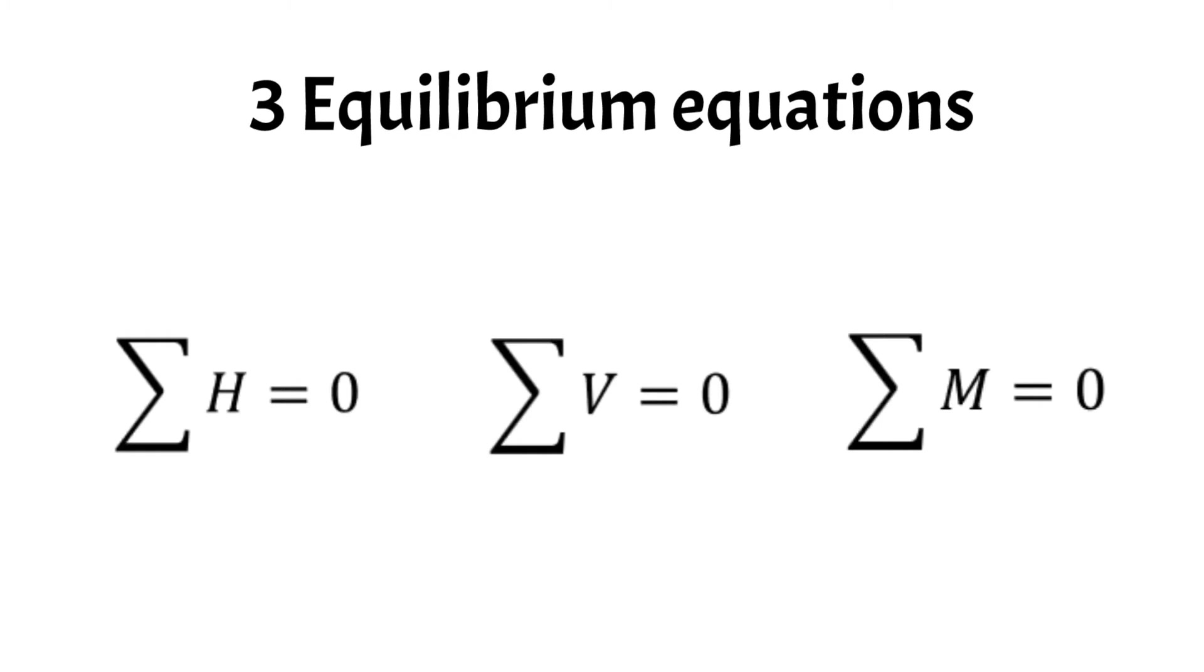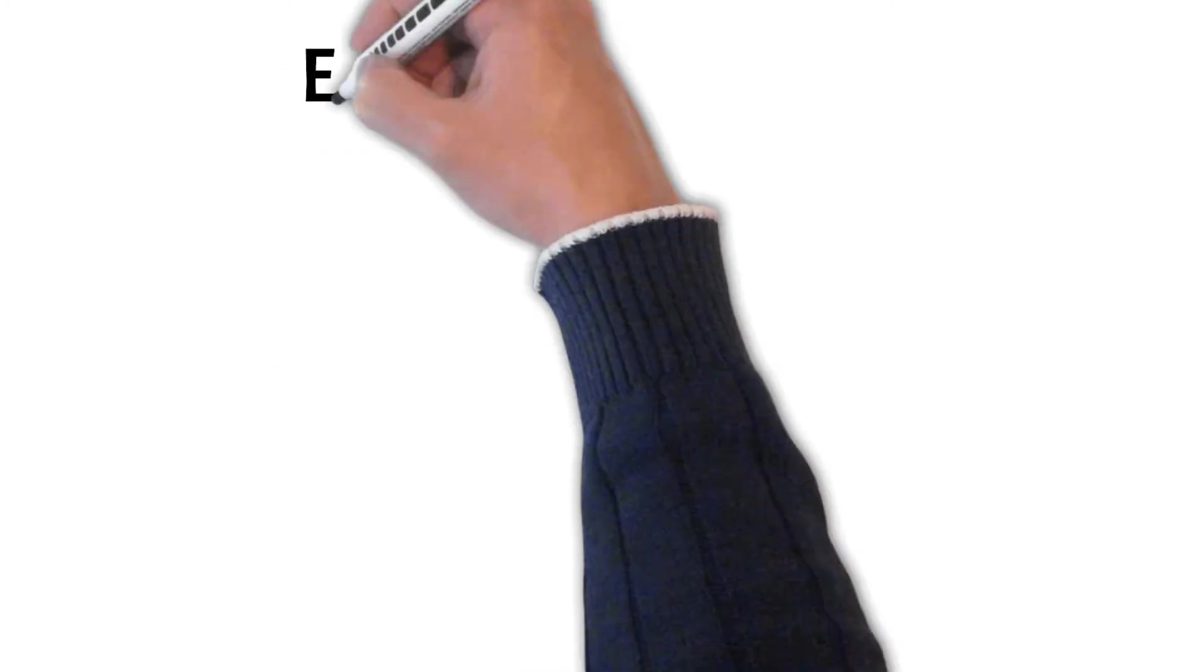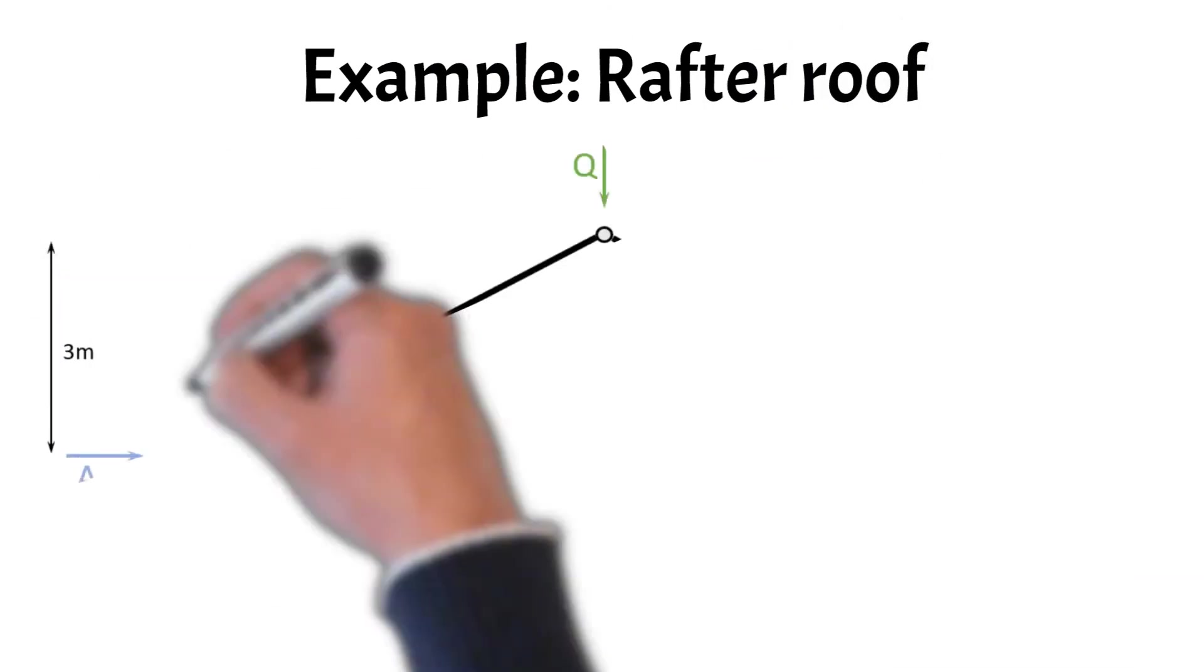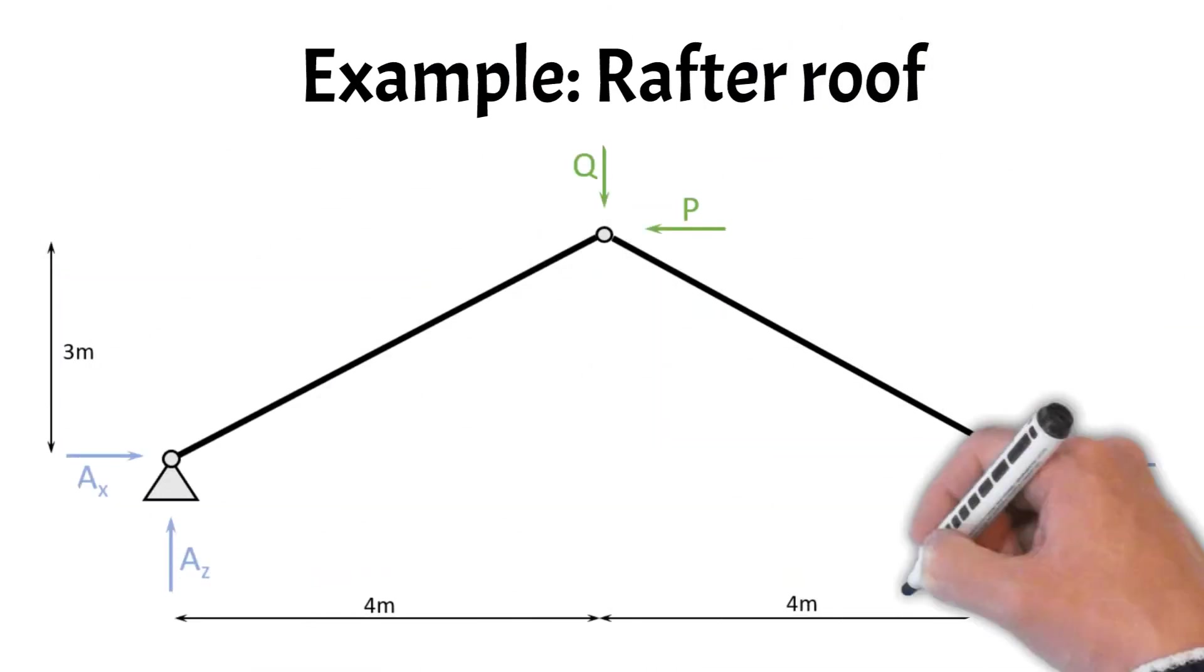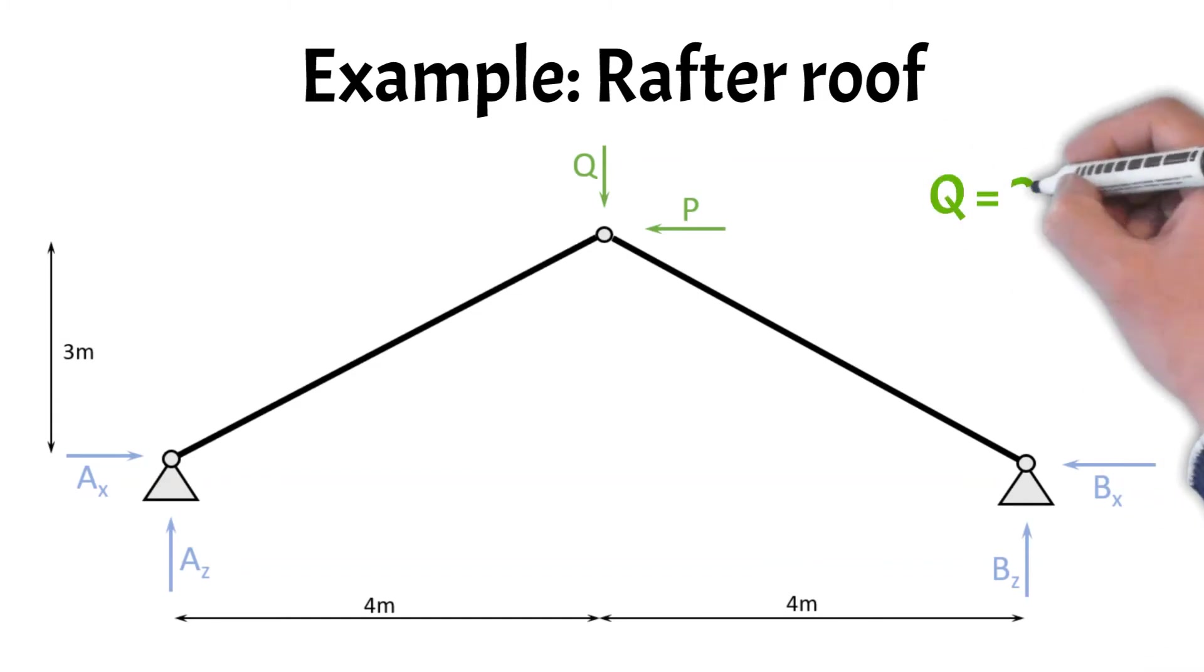Alright, let's use that in an example of a rafter roof of a height of 3 meters and a span of 2 times 4 meters. The rafter roof has two pins, which means that both supports have a horizontal and a vertical reaction force. An external vertical load Q of 2 kN and an external horizontal load P of 3 kN are applied to the hinge.